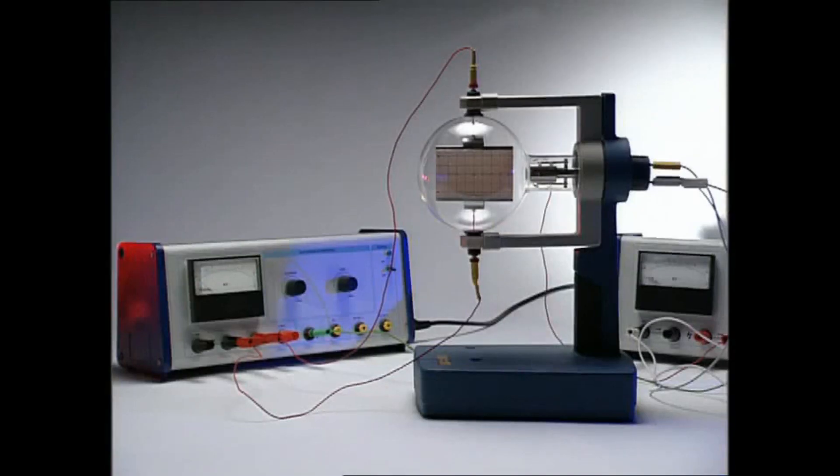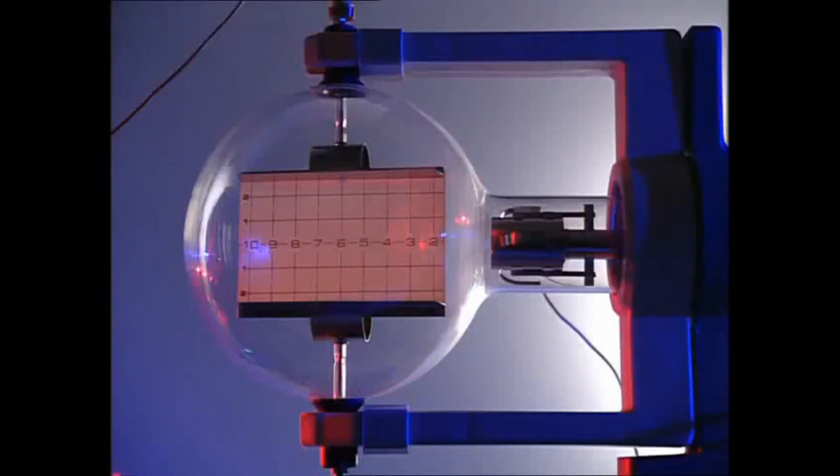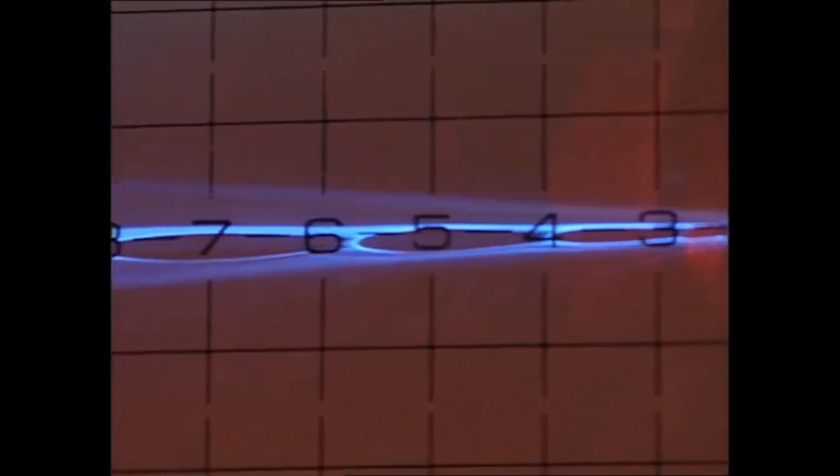Here's a modern version of Thompson's apparatus, an evacuated tube containing an anode and a cathode. Heat the cathode and it produces a beam of cathode rays. The beam cuts across a fluorescent screen.